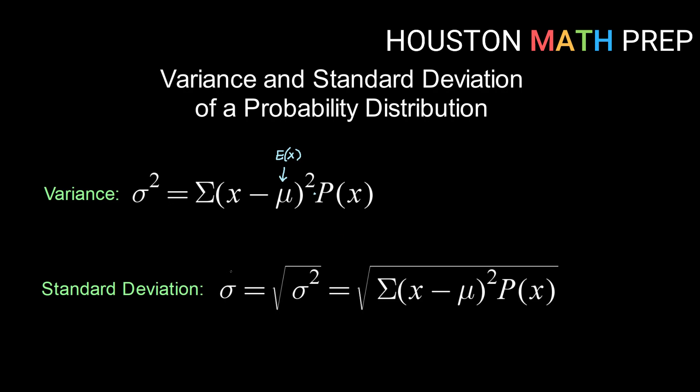And our standard deviation, or sigma, is of course just the square root of sigma squared. So we can calculate the variance and then just take its square root to get the standard deviation. So let's see an example of that.